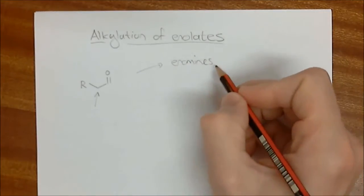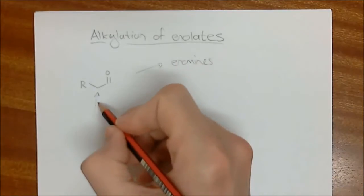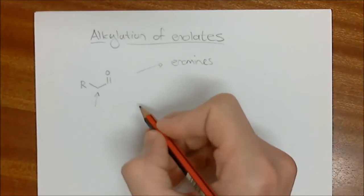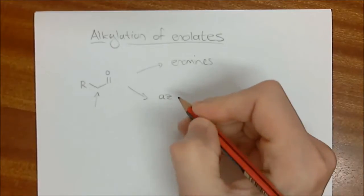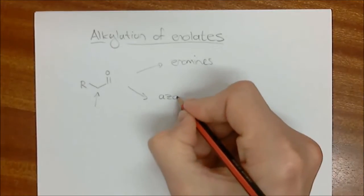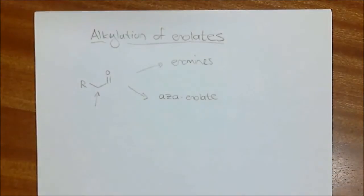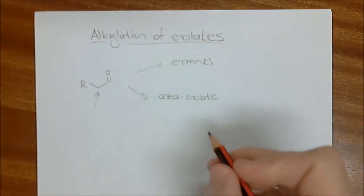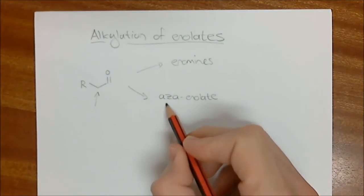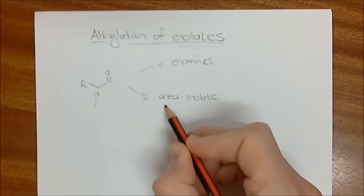Enamines are good but very limited in scope in terms of what electrophiles you can use. Today I'm going to deal with a far more useful approach in terms of its applicability, and that's the aza-enolate. We already looked at what an aza-enolate is in a previous lecture — essentially it is the nitrogen equivalent of an enolate. 'Aza' is another word for nitrogen.